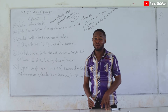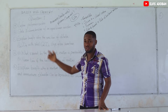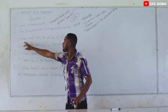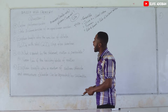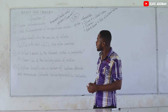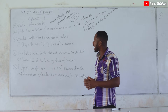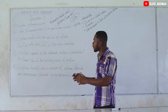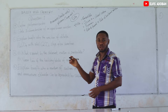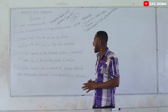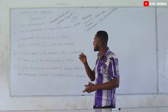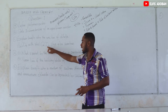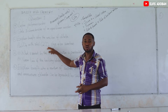We have stated four characteristics but were asked to state three, so that's more than enough. Now for question C: explain briefly why the reaction between dilute H₂SO₄ and solid CaCO₃ (calcium carbonate, also called marble chips) stops after some time.